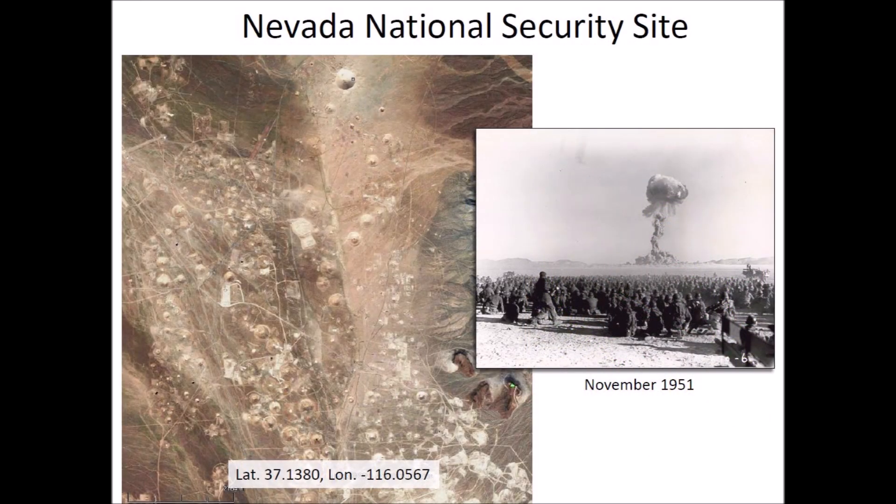On January 11, 1951, the United States Department of Energy established an area for testing nuclear devices in Nevada, 65 miles northwest of the city of Las Vegas, originally called the Nevada Proving Grounds. A November 1951 nuclear test with a yield of 21 kilotons of TNT was the first U.S. nuclear field exercise conducted with live troops maneuvering on land. The troops in this image were located six miles away from the blast.